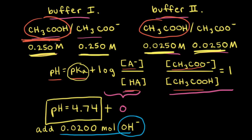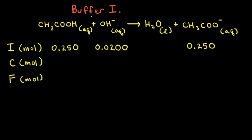To make the math easier we're going to assume that the total volume of the buffer solutions is equal to one liter both before and after the addition of the base. So if the total volume is one liter and the concentration of acetic acid is 0.250 molar in buffer 1, that means there's 0.250 moles of acetic acid in the buffer. So 0.250 moles of acetic acid will react with the 0.0200 moles of hydroxide anions that we're adding to buffer solution 1.